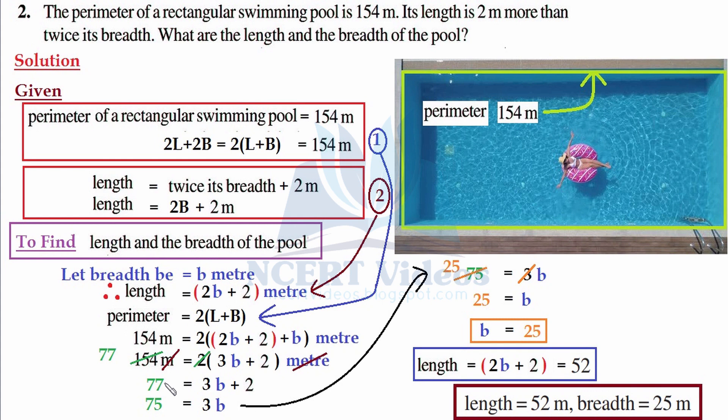So 77 minus 2 is 75, and we are left with 3b only on the right-hand side. So we are writing the same here due to space issues. Now we can cancel it; it is very similar to transposing.